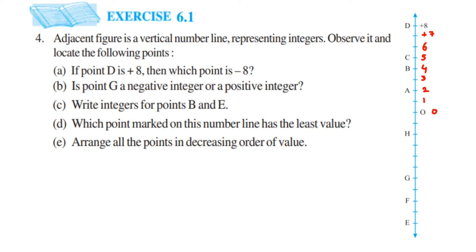The point O is nothing but 0. On the opposite side of the number line, opposite of positive integers gives us negative integers. So after 0 we get minus 1, then minus 2, minus 3, minus 4, minus 5, minus 6, minus 7, minus 8, minus 9, and then minus 10.